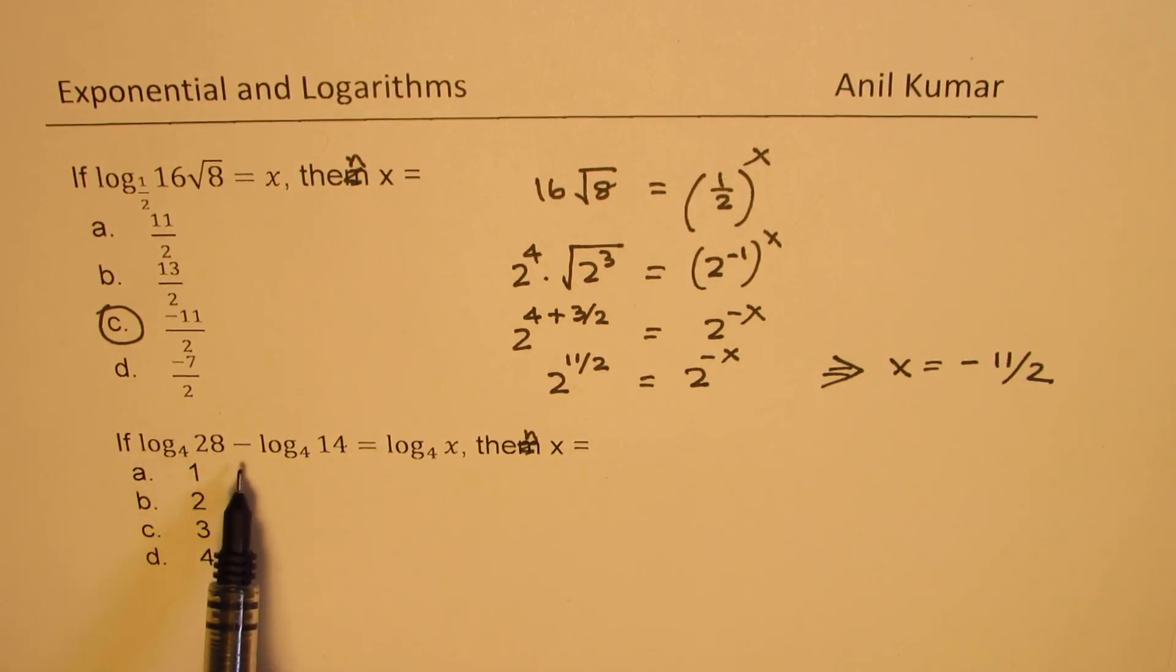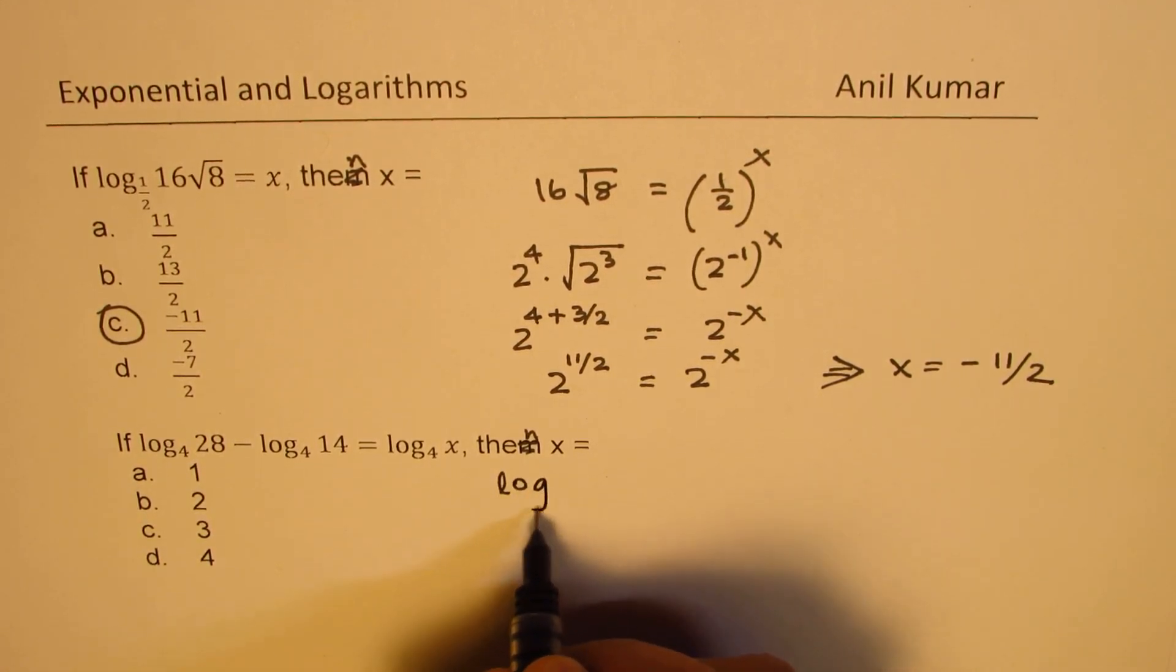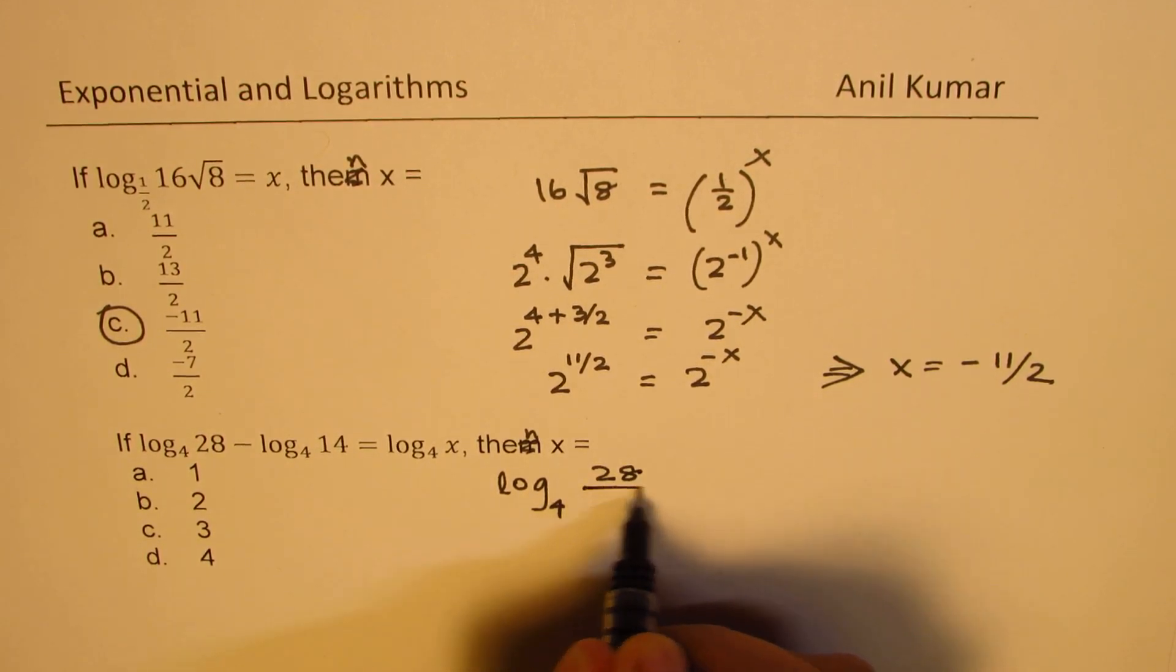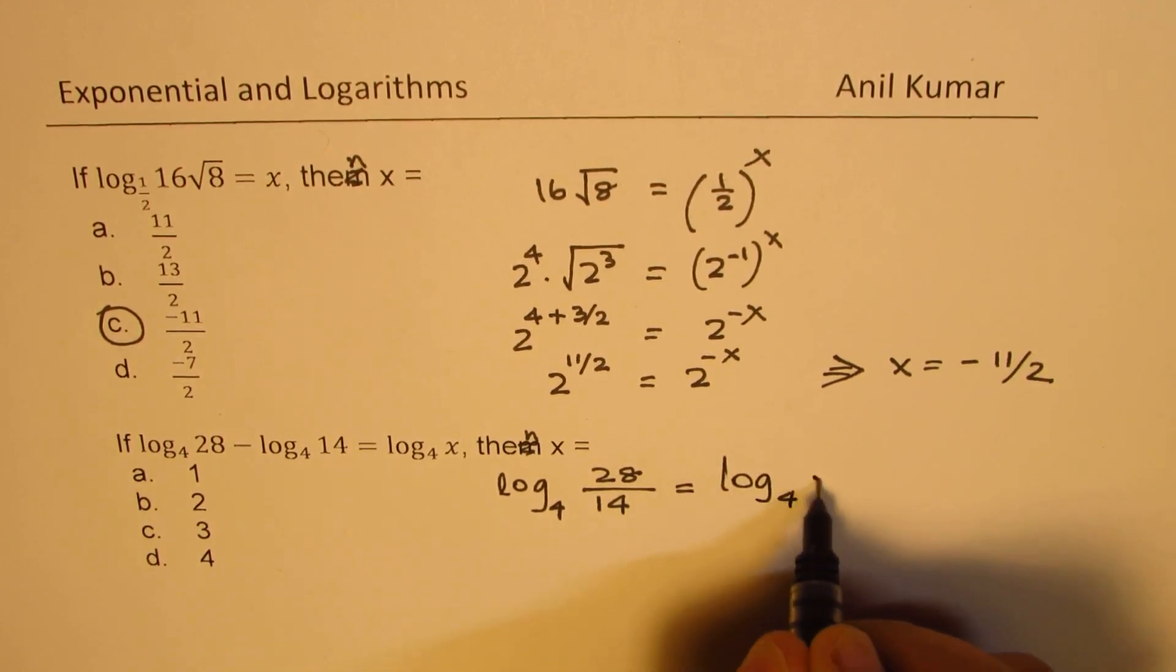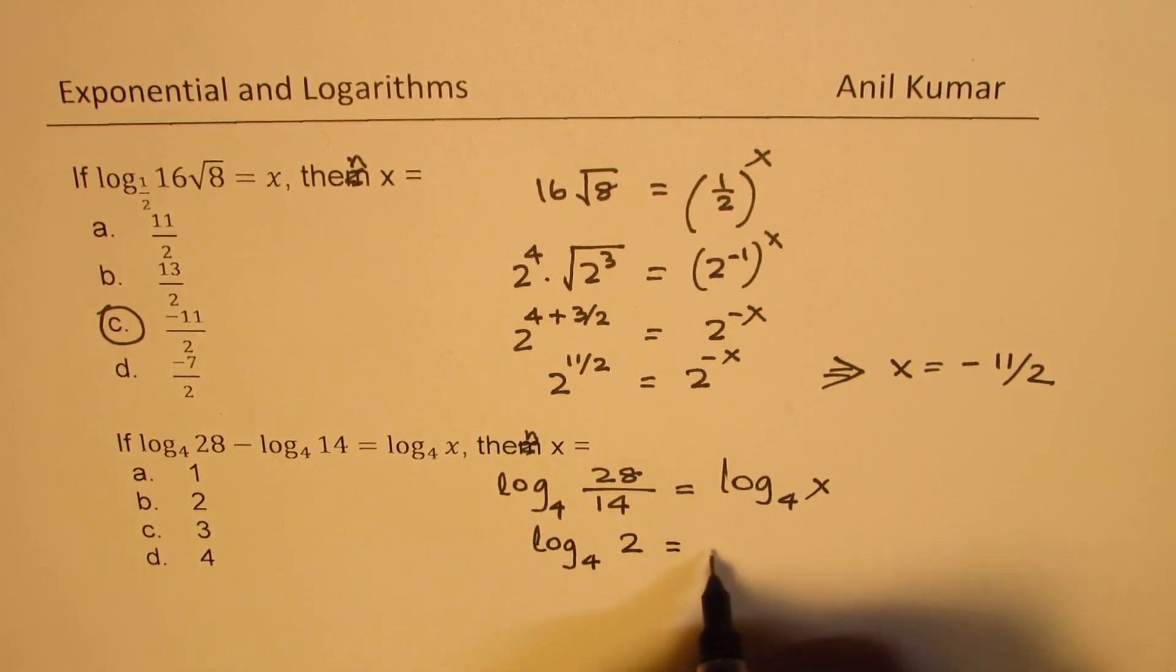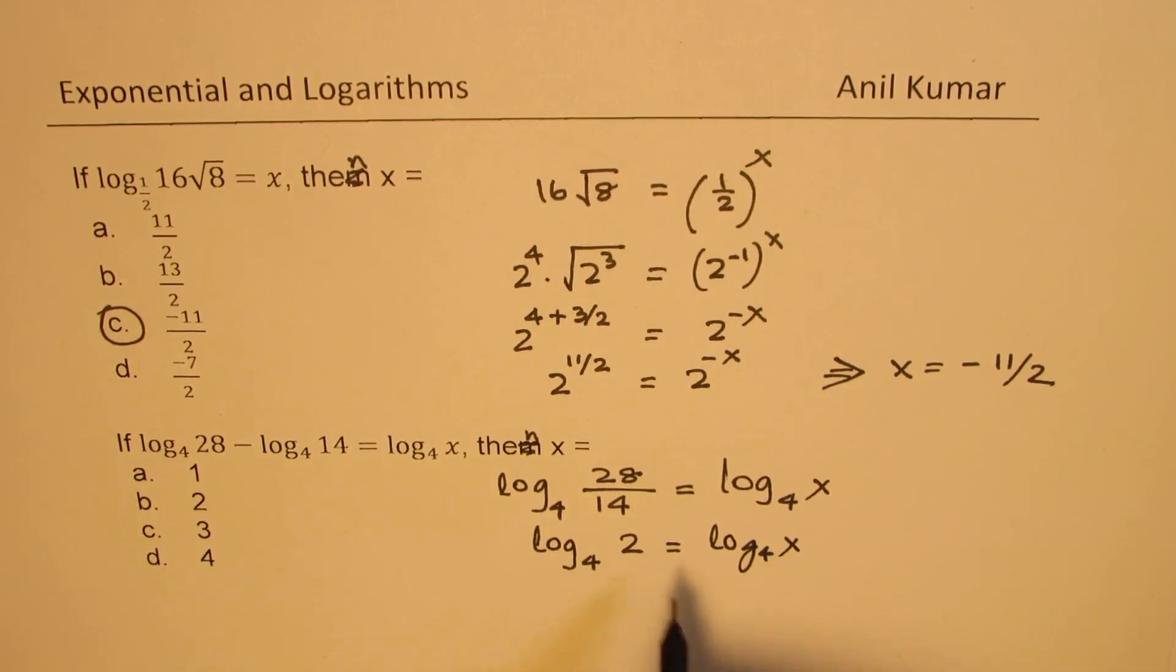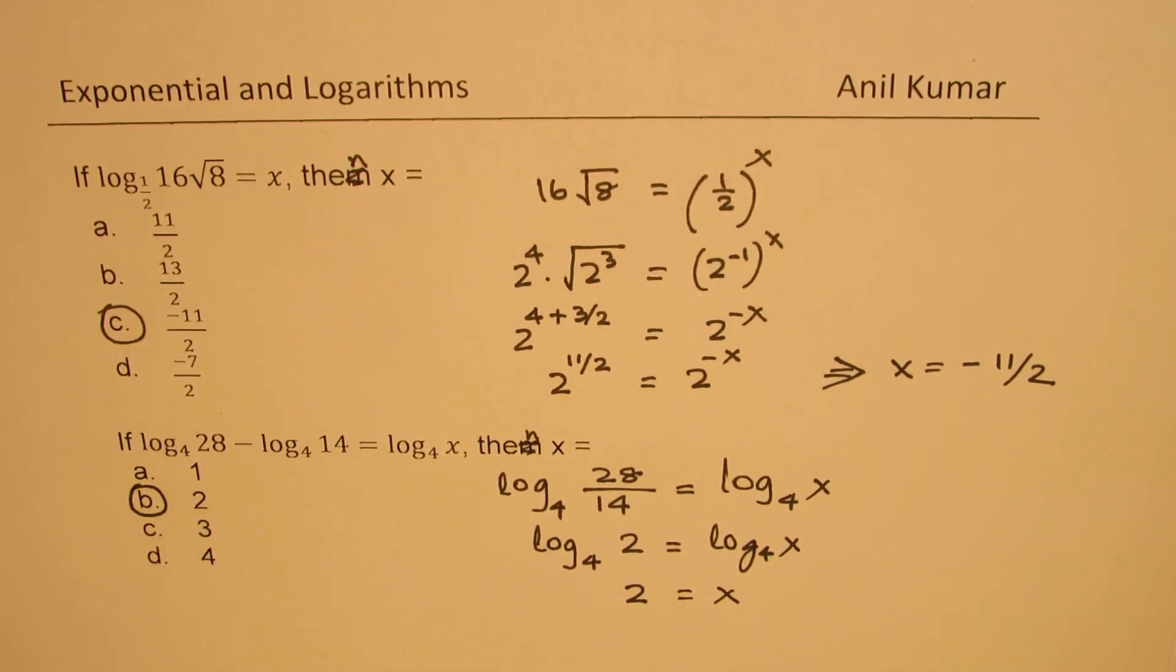If log to the base 4 of 28 minus log to the base 4 of 14 is equal to log to the base 4 of x, then x is what? We'll apply the logarithmic rules. Minus means division. So what we get here is log to the base 4 of 28 divided by 14, and that is equal to log to the base 4 of x. That goes 2 times. So we get log to the base 4 of 2 is equal to log to the base 4 of x. So clearly x equals 2. So we get option b as the correct option.